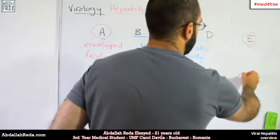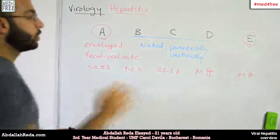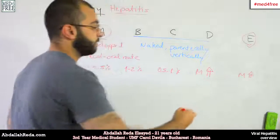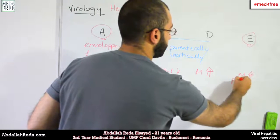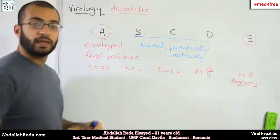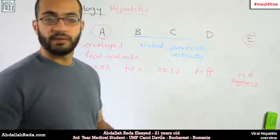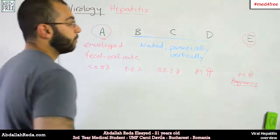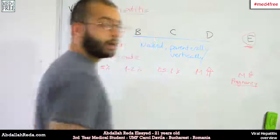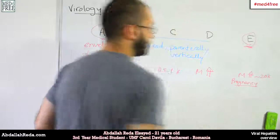For hepatitis E, high mortality applies in a specific case we'll mention now. Normally, mortality rates for E are okay, but in the case of pregnancy — because pregnancy is a state of general immunodepression in the mother, as she's trying not to reject the fetus — mortality rates if hepatitis E is present are around 20%, which is high.